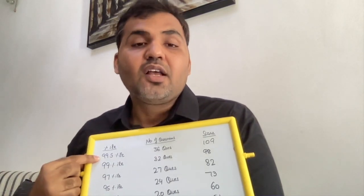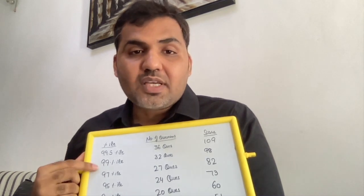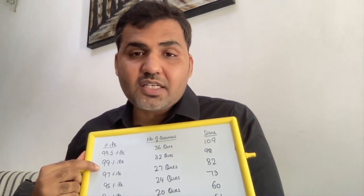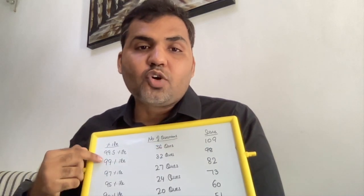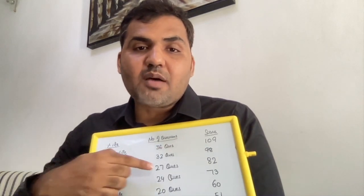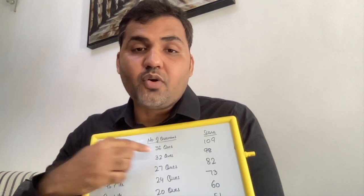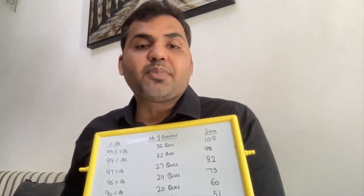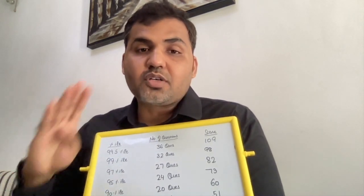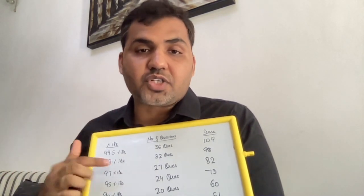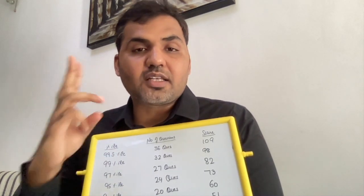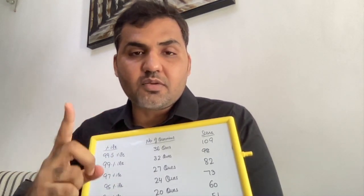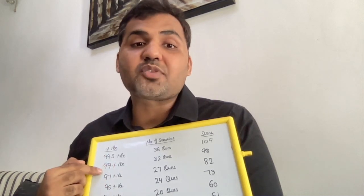Now, to get 99 percentile, the score required is 98. So to gain that extra 0.5 percentile, you need four extra questions. To get a jump of 0.5 percentile, you need to attempt four extra questions. With 32 questions — one section with 12 questions and the other two sections with 10 questions each — you can get yourself to 99 percentile.